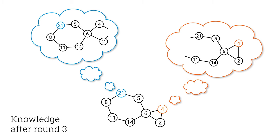After round 3, everyone knows their radius 3 neighborhood. After round 4, everyone knows their radius 4 neighborhood. And so on.